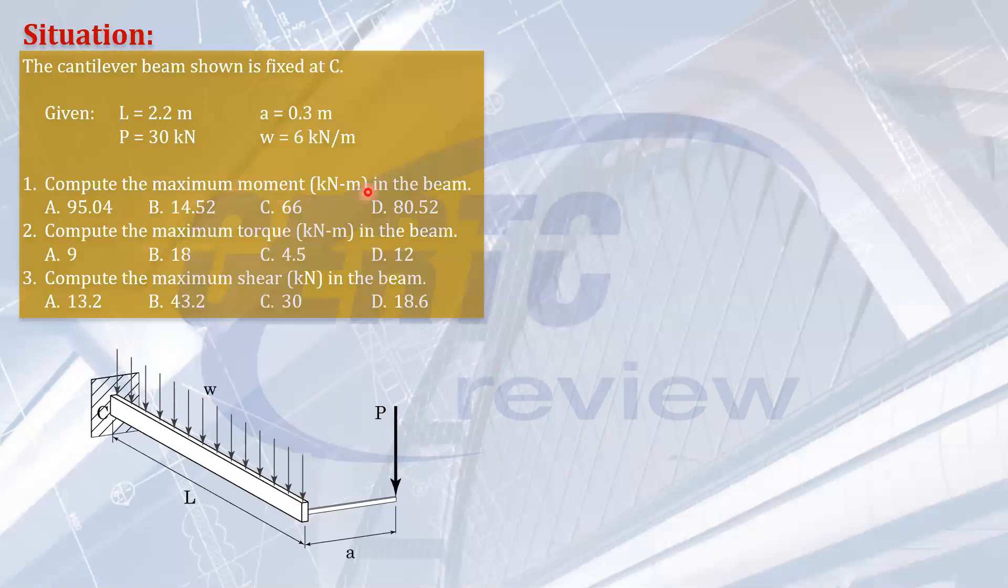Let's do first the maximum bending moment in the beam. Where will it occur or what force will cause that? Bending is along the length, it's not twisting. The bending will be caused by this uniform load and the concentrated load. It will bend about C, and that will be the biggest bending moment here. This is a cantilever beam, it will always occur at the fixed end.